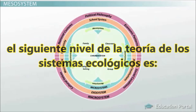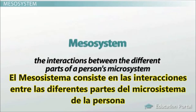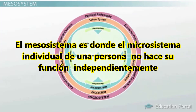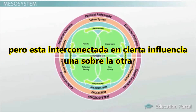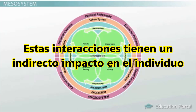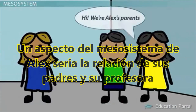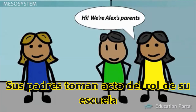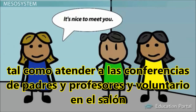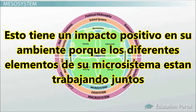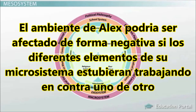The next level of Ecological Systems Theory is the Mesosystem. The Mesosystem consists of the interactions between the different parts of a person's Microsystem. The individual Microsystems do not function independently, but are interconnected and assert influence upon one another, having an indirect impact on the individual. One aspect of Alex's Mesosystem would be the relationship between his parents and his teacher. His parents take an active role in his school, such as attending parent-teacher conferences and volunteering in the classroom. This has a positive impact on his development, though it could be negative if elements of his Microsystem were working against one another.